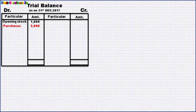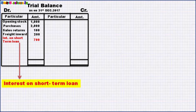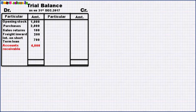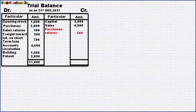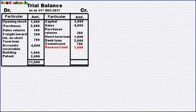Purchases 2000, sales returns 100, freight inward 200, interest on short-term loans 700, accounts receivable 4000, building 1000, patents 2000. Capital 2000, sales 4000, purchases returns 300, short-term loans 1000, bank loan 2000, commission 700, reserve fund 1000. Total is 11,000 on both sides.